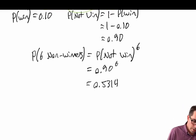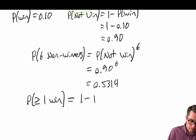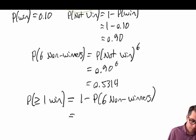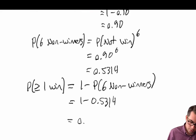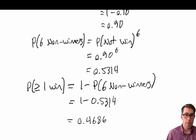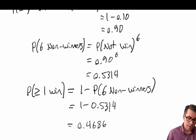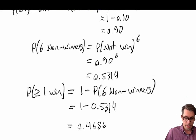The question asks for the probability of greater than or equal to one win. From there we just take one minus the probability of six non-winners, which equals one minus 0.5314, giving us 0.4686. The probability that you have at least one winner when buying a six-pack of Pepsi with a 10% chance of winning on each bottle is 0.4686.